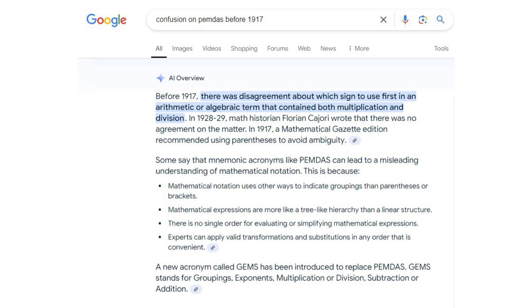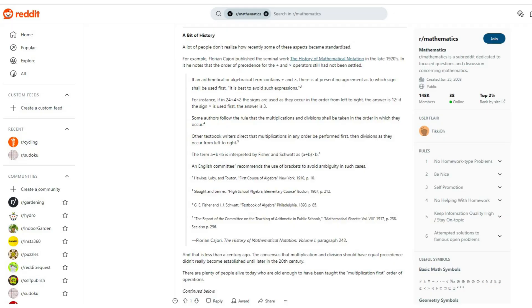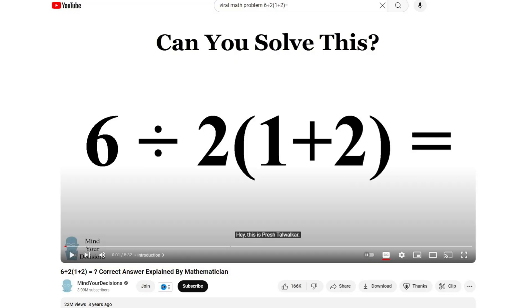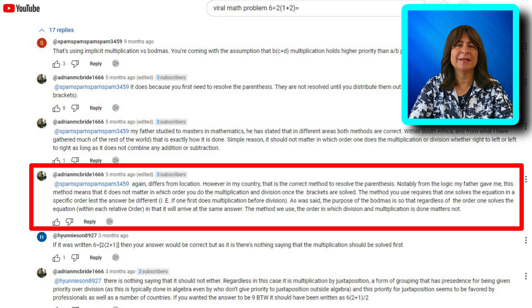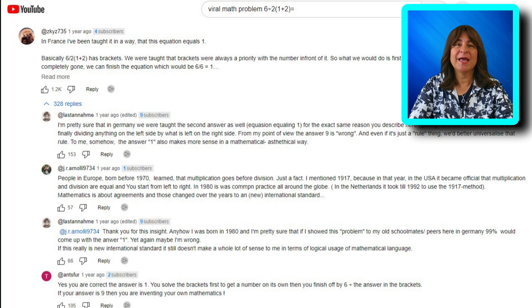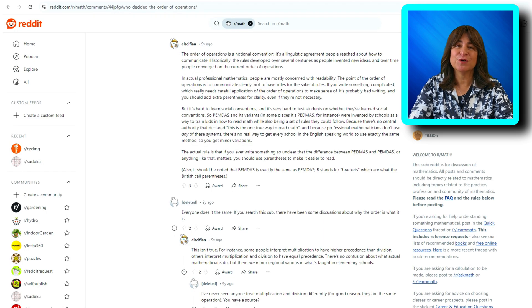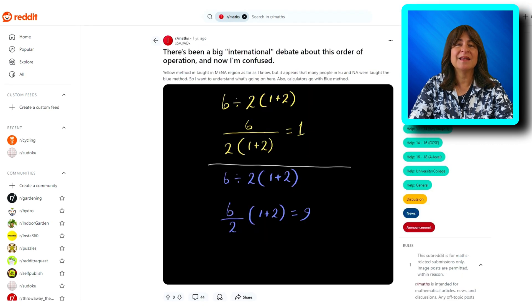Well, back before the early 1900s, there was actually much controversy about the order of operations. Some of that was caused by confusion since typesetters didn't always take the extra time or didn't have enough space on a page to include parentheses when needed. And apparently there is still much controversy. If you look at this viral math problem on YouTube, you will see it has 23 million views. And in the comments section, there is a lot of controversy. Some claiming that in their country, math is done differently. We will revisit this viral math problem and see what the solution might be. But first, let's get back to talking about how PEMDAS works and then I'll address the previous problems, including the viral one.